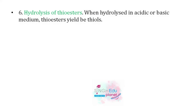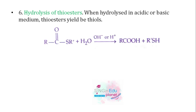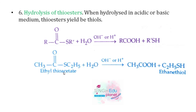Sixth method: from hydrolysis of thio esters. When thio esters are hydrolyzed in acidic or basic medium, they give thiols and carboxylic acid. For example, ethyl thioacetate treated with water gives ethyl thiol and ethanoic acid. That concludes all the preparation methods of thiols.